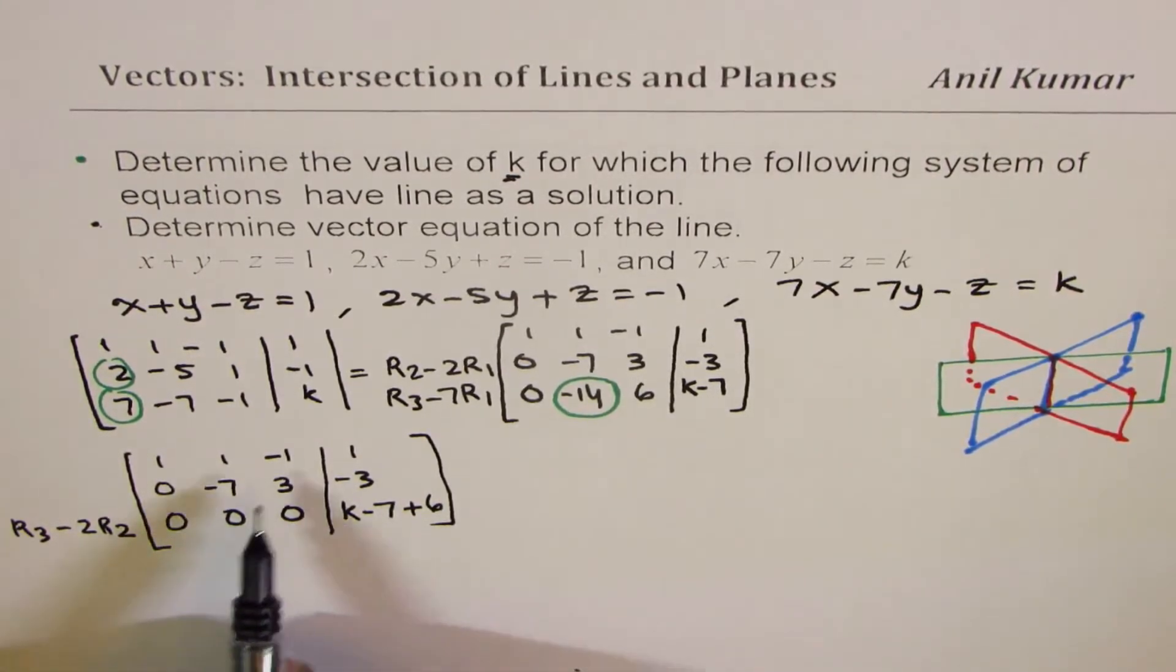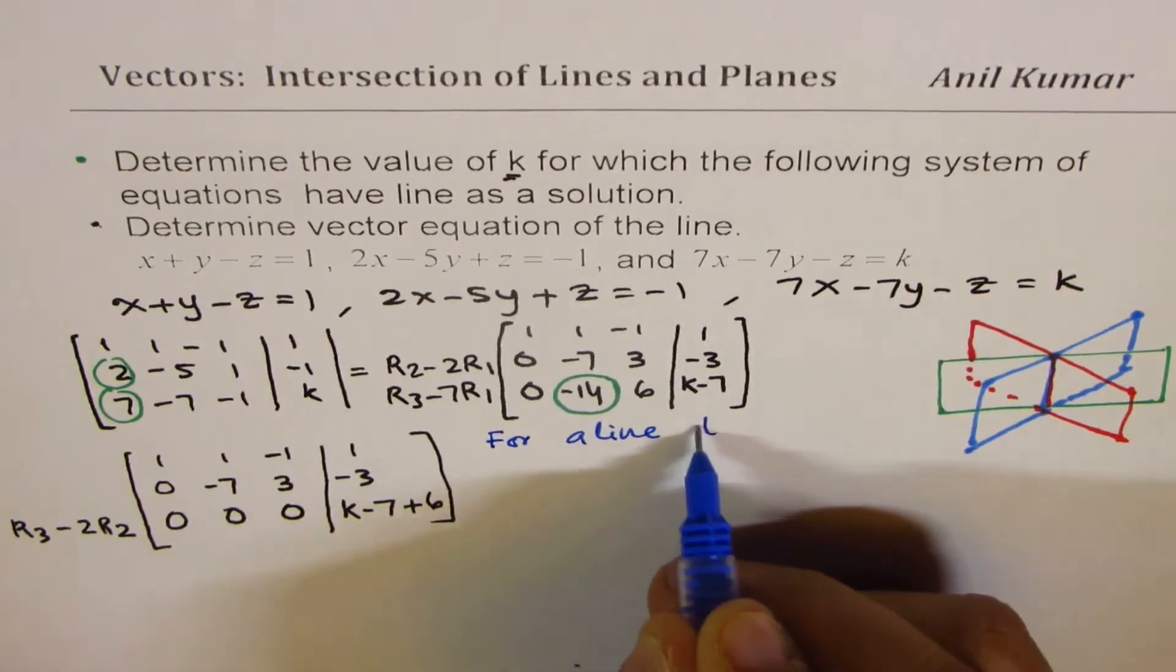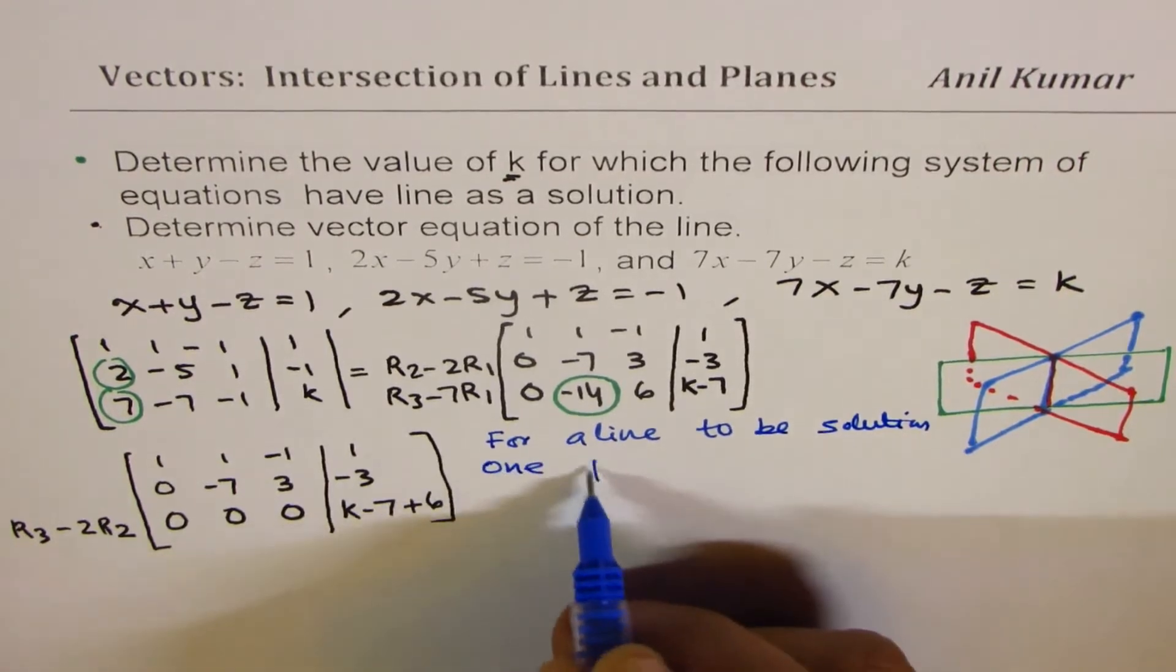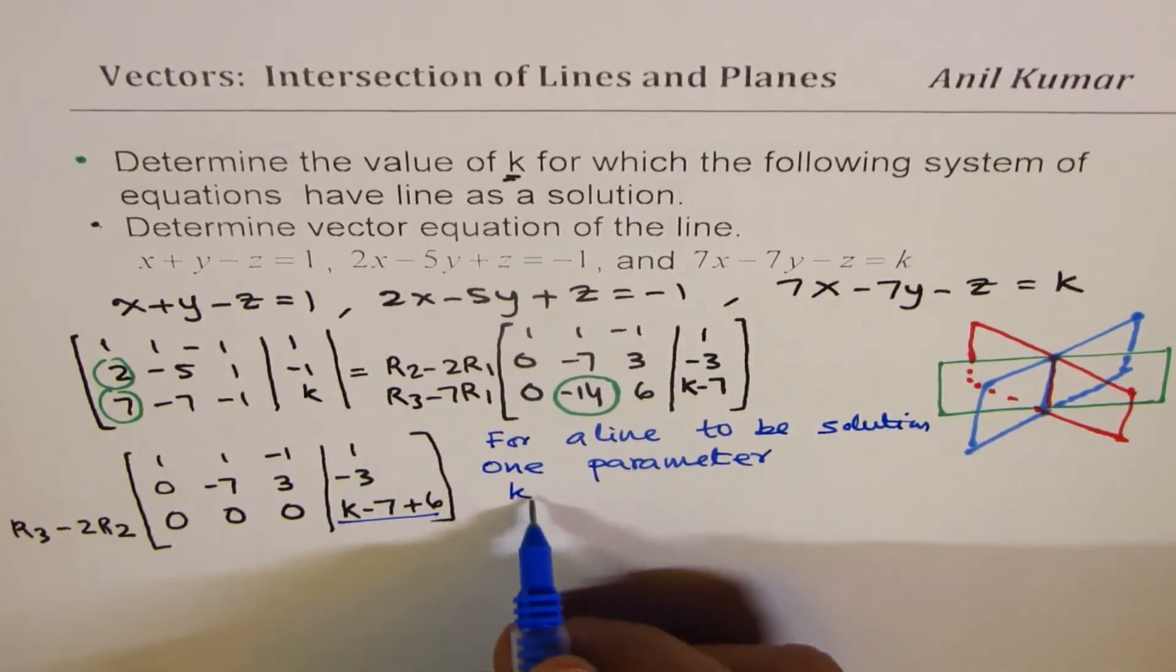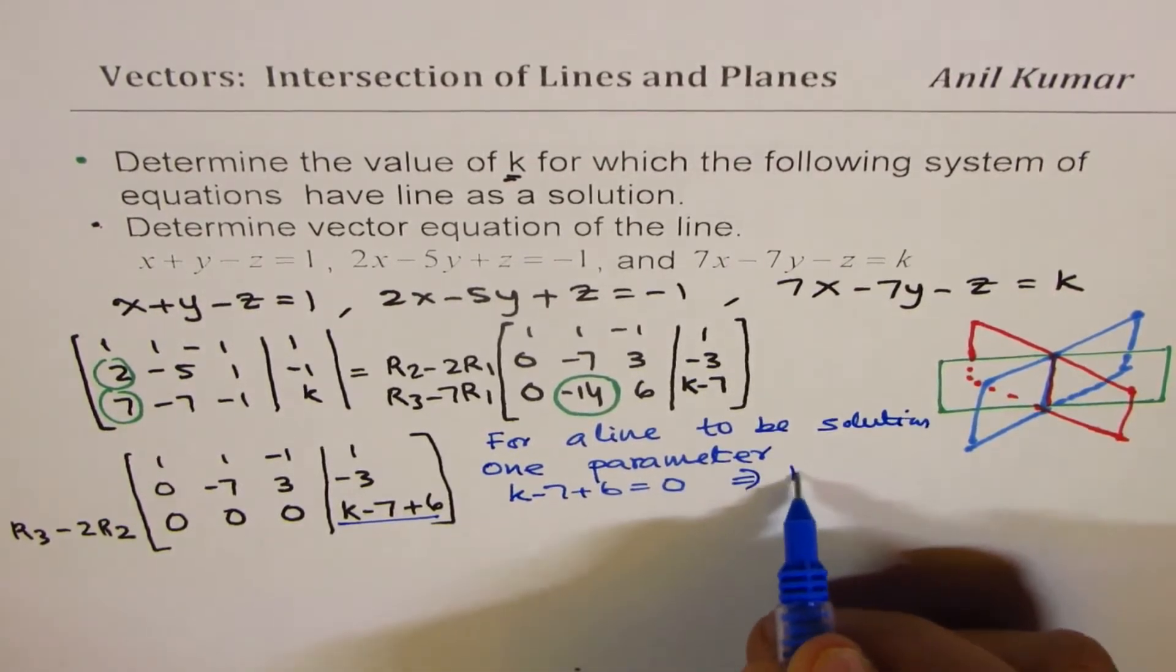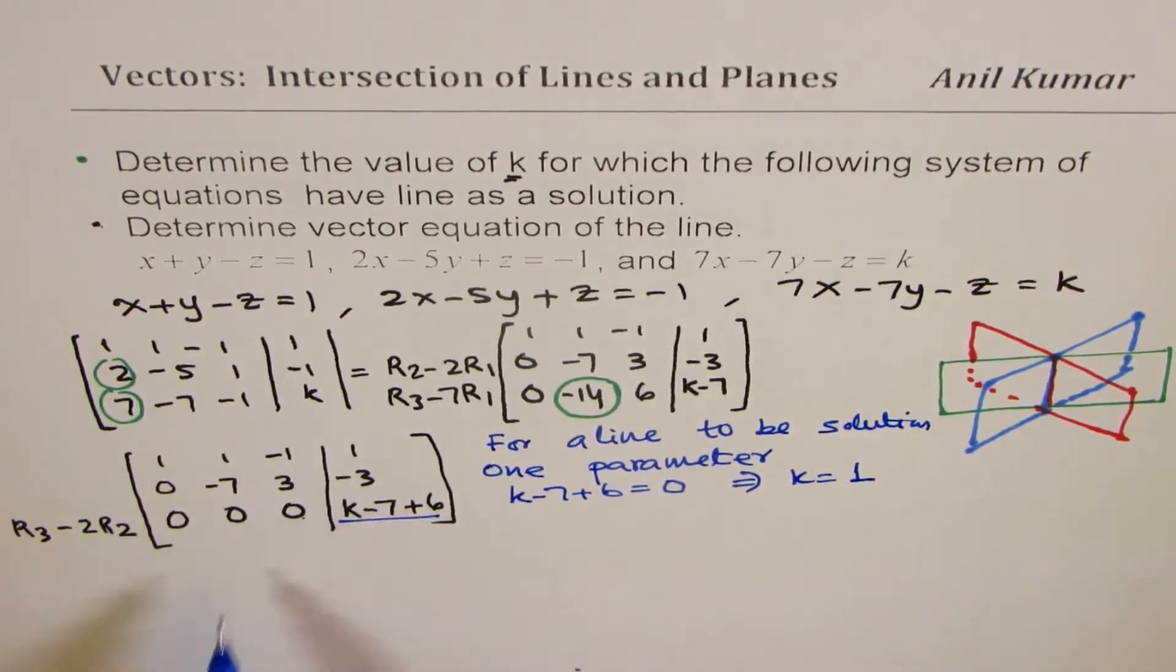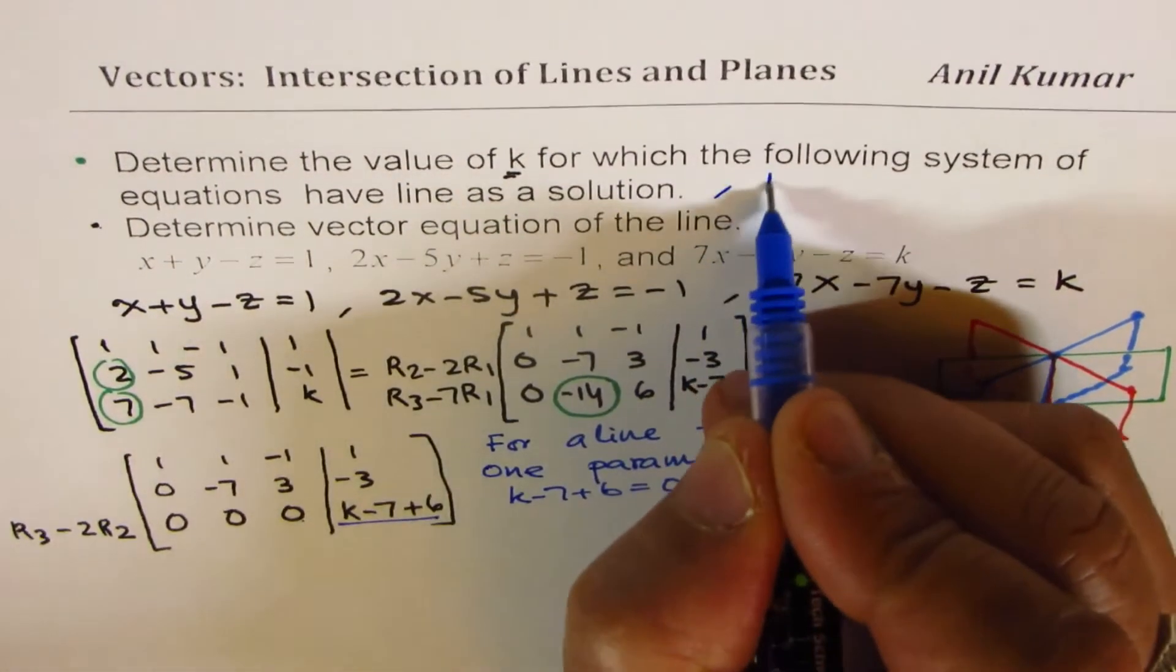Now, in the last equation, in the last row, we have 0, 0, 0 equals to k minus 7 plus 6. Now, for a line to be solution, that means one parameter. Line has one parameter. This number, k minus 7 plus 6, should be equal to 0. So that gives you that k should be equal to 1. So for k equals to 1, only we'll get 0 equals to 0. That will be the solution. So first part is find the value of k, so we get k equals to 1.